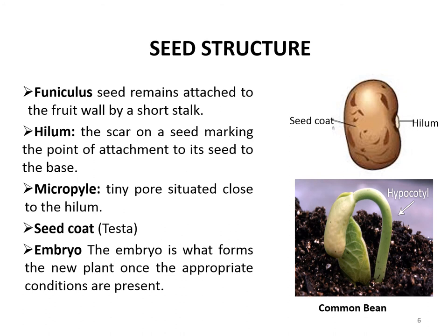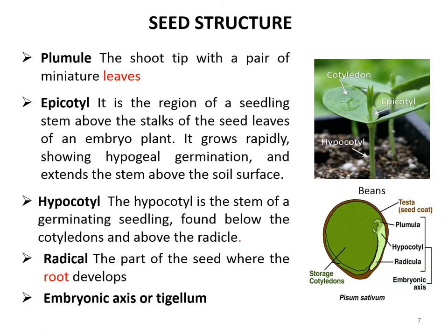On removing the seed coat, the embryo is exposed. The embryo is actually a fertilized ovule — an immature plant from which a new plant will grow under proper conditions. The next part is the plumule, which is the shoot tip with a pair of miniature leaves, also called the embryonic shoot. The base of the plumule is called the epicotyl, which is the region of a seedling stem above the stalks of the seed leaves of an embryo plant.